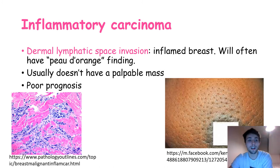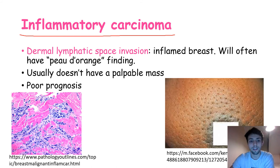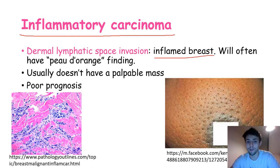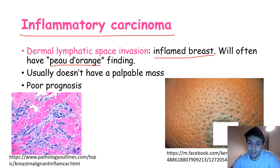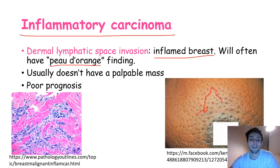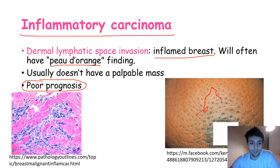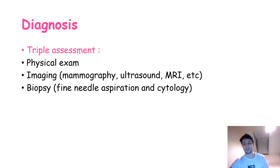Another type is inflammatory carcinoma, where there is dermal lymphatic space invasion by the cancer and the breast becomes very inflamed — a very painful condition. These patients can have what's called peau d'orange, visible in the photo shown, which is skin dimpling that looks like the skin of an orange due to tiny holes in the skin. It usually does not have palpable masses and carries a very poor prognosis.